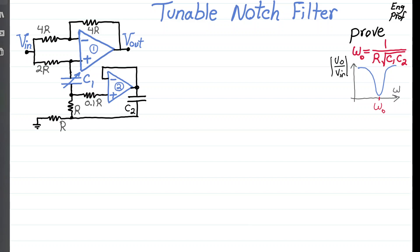A tunable notch filter is shown here, designed with two op-amps. We want to see why this is working like a notch filter, and if that is the case, then we want to prove that omega_0, the center frequency of the notch, is 1 over R times the square root of C1·C2. As shown here, this is the plot of magnitude response. On the y-axis you can see the absolute value of Vout over Vin, which is the absolute value of the transfer function. On the x-axis you can see omega in radians per second, which is the frequency.